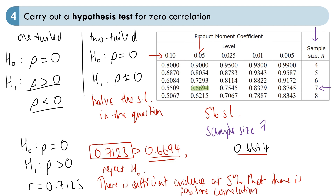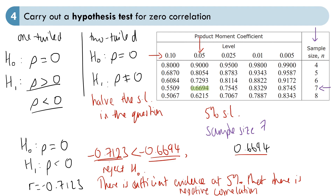If we were testing for negative correlation and the value in the question was minus 0.7123, then minus 0.7123 is less than — so closer to minus 1 than — minus 0.6694. So we reject H0 because this is extreme enough, close enough to minus 1, to suggest negative correlation. We conclude there is sufficient evidence at the 5% level of negative correlation between the two variables. You must make sure this conclusion is based on the context of the question — that is very important.